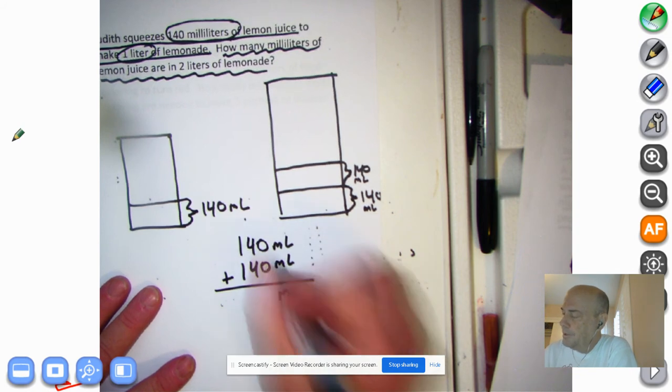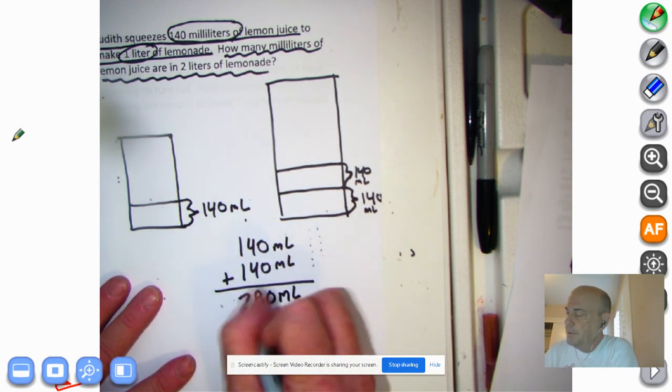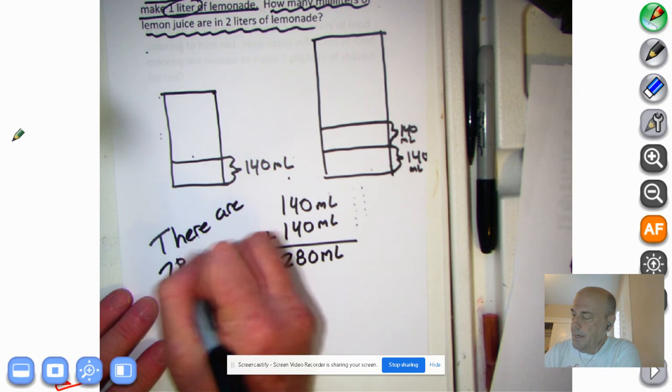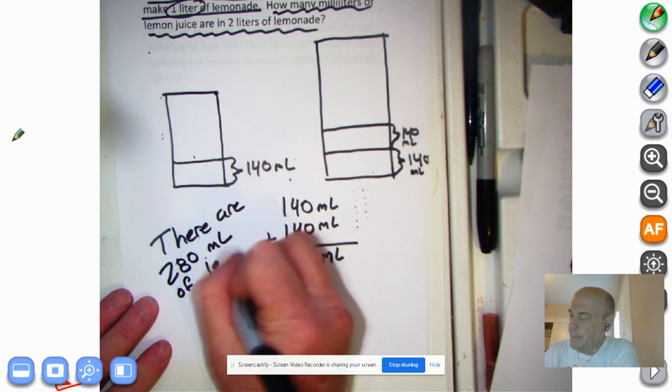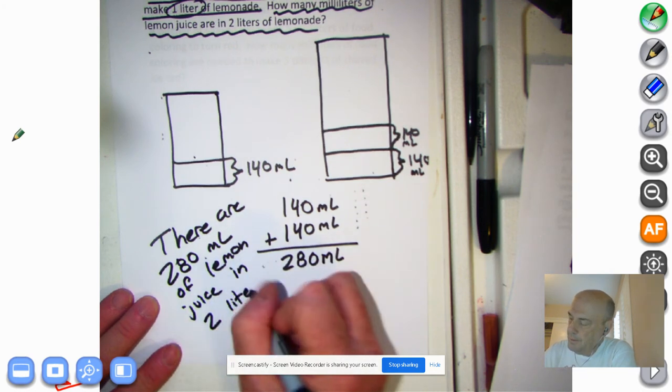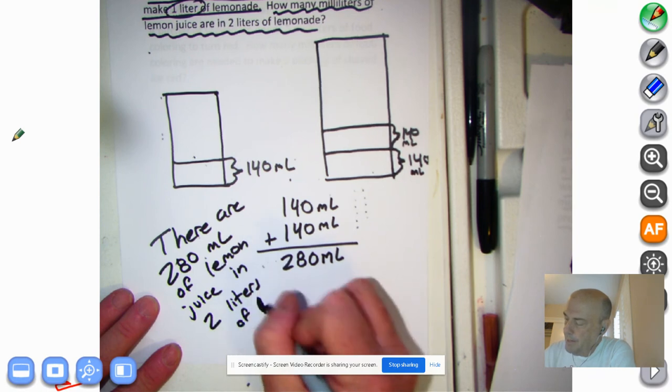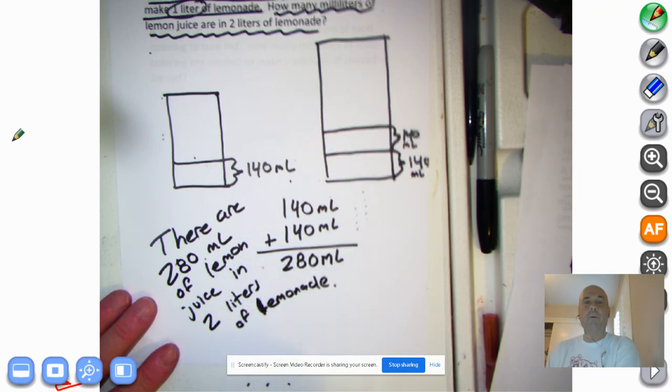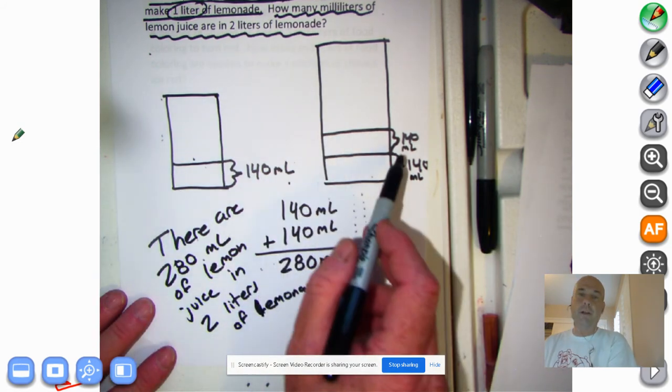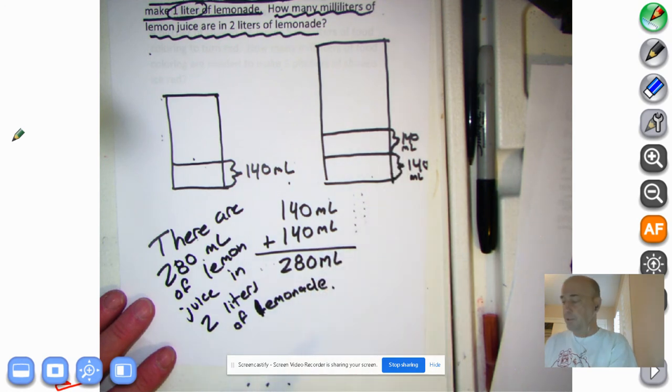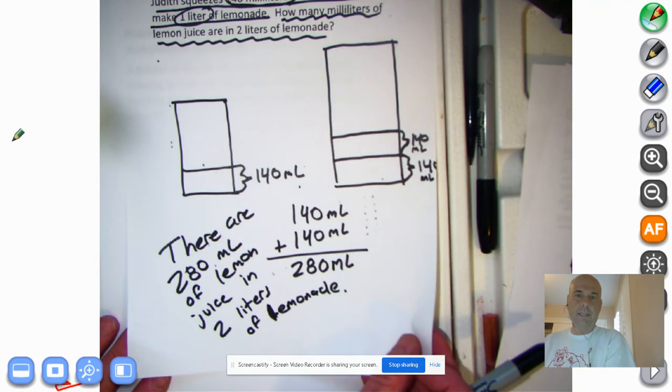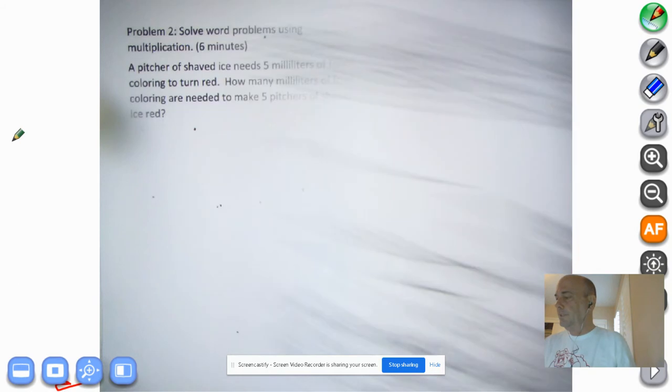Okay, drop down the ML, 0 plus 0 is 0, 4 plus 4 is 8, and 1 plus 1 is 2. So we can say, there are 280 milliliters of lemon juice in 2 liters of lemonade. So what we did is we had 140 milliliters to make 1 liter, so now we have 2 liters. Judith is going to have to squeeze out another 140 milliliters of lemon juice, all right? Okay, you need to pause the tape if you have to do that. Go ahead and do this and get that all down. I really want you to get into the practice of writing problems in a sentence and take a little break,